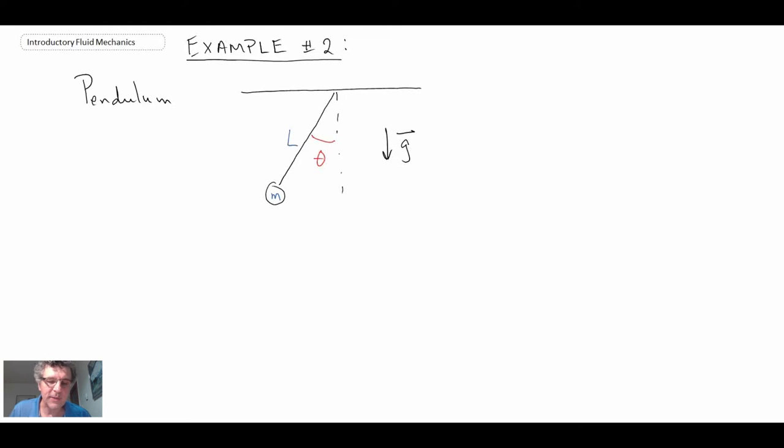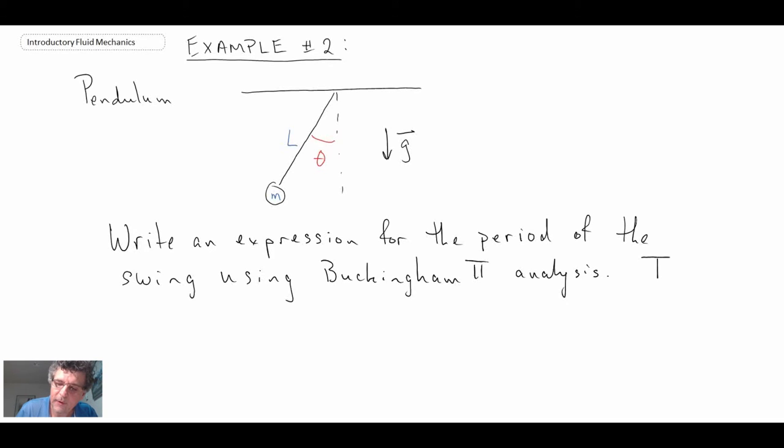So here's a schematic of a pendulum. The mass of the bob is mass m. The length of the pendulum is L and it is at an angle theta with respect to the vertical and the gravity vector is g. And so what we're asked to do is to write an expression for the period of the swing using Buckingham Pi analysis. The period of the swing would be the time for a full cycle and it is given capital T.